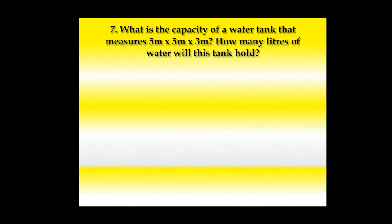Now look at question number 7: what is the capacity of a water tank that measures 5 meters × 5 meters × 3 meters? The second part asks how many liters of water this tank will hold. In this question we need to understand capacity, which means volume. Volume has three dimensions: length, breadth, and height. These are already given as 5 m × 5 m × 3 m, so we simply multiply to get the capacity.